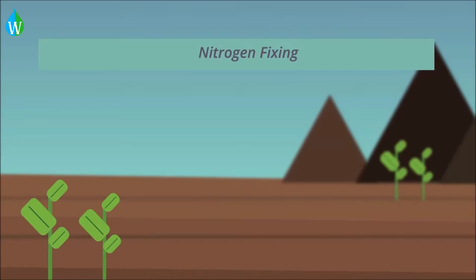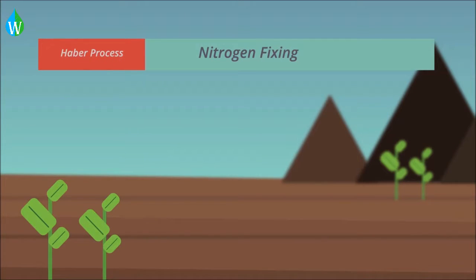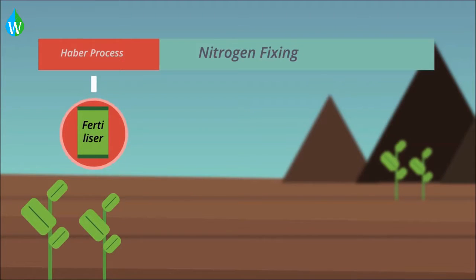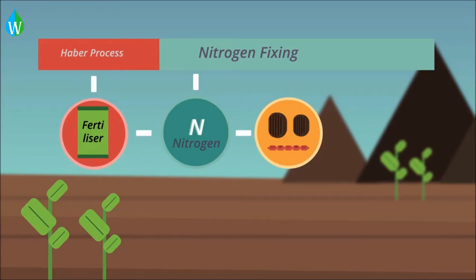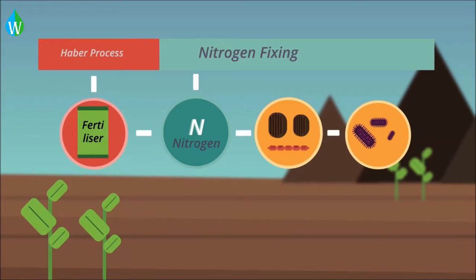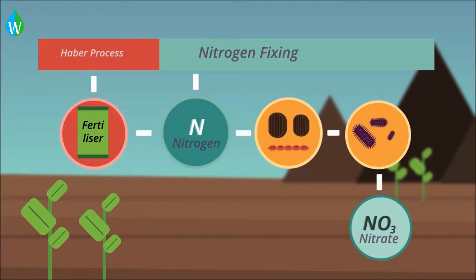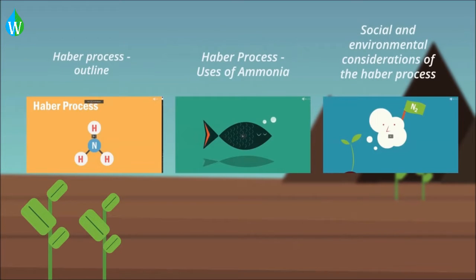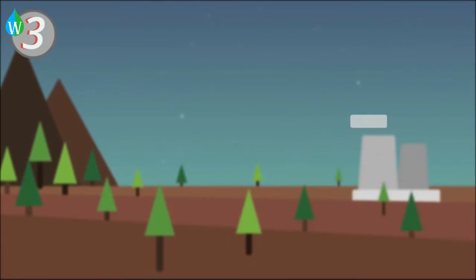These are the natural ways through which nitrogen fixing occurs. The Haber process, which is how fertilisers are made, makes up approximately 30% of the nitrogen fixing. Because nitrogen is essential for making proteins, and proteins are essential for cell production, and cell production is how growth occurs, fertilisers are therefore used to increase the nitrates in the soil to maximise plant growth. Watch our videos on the Haber process to learn more about this.